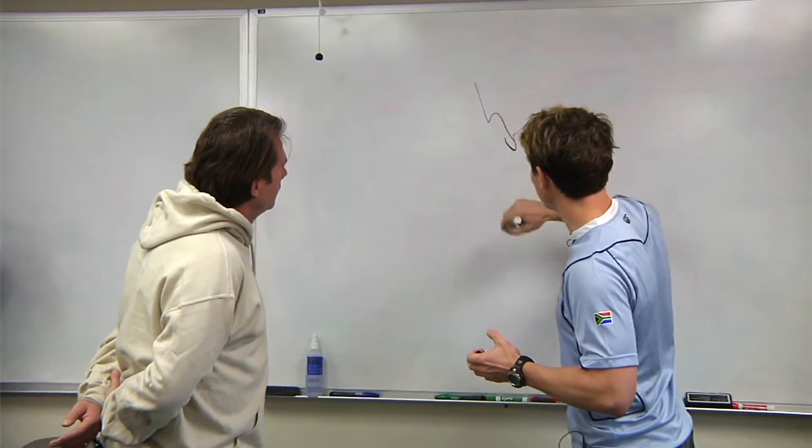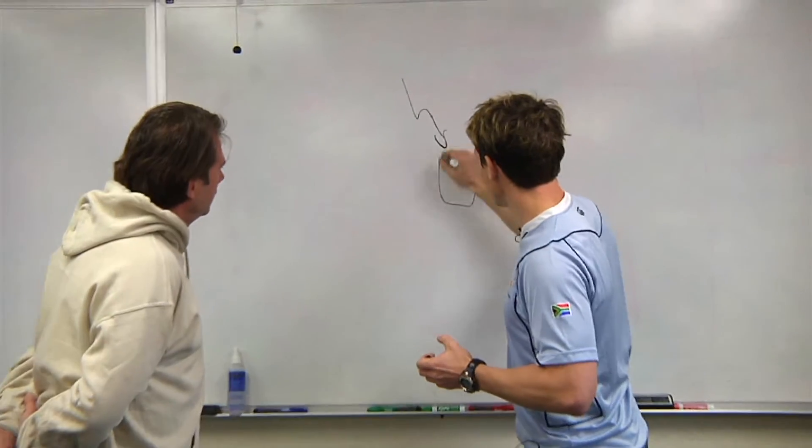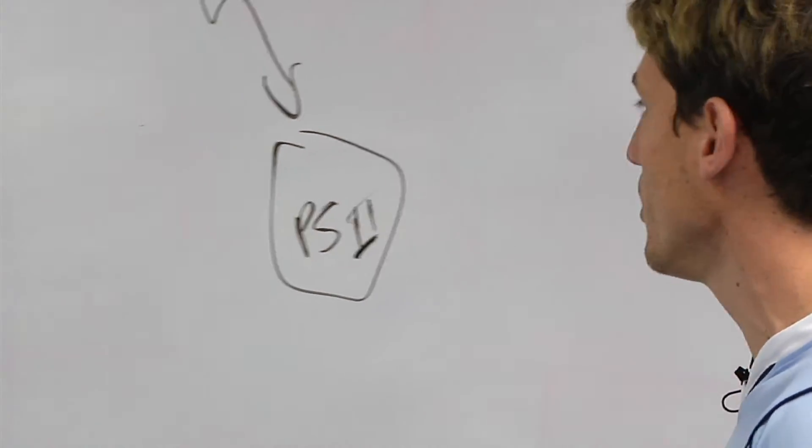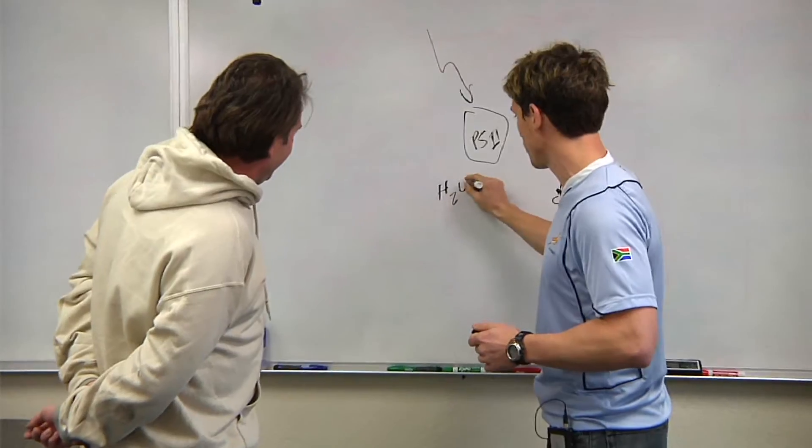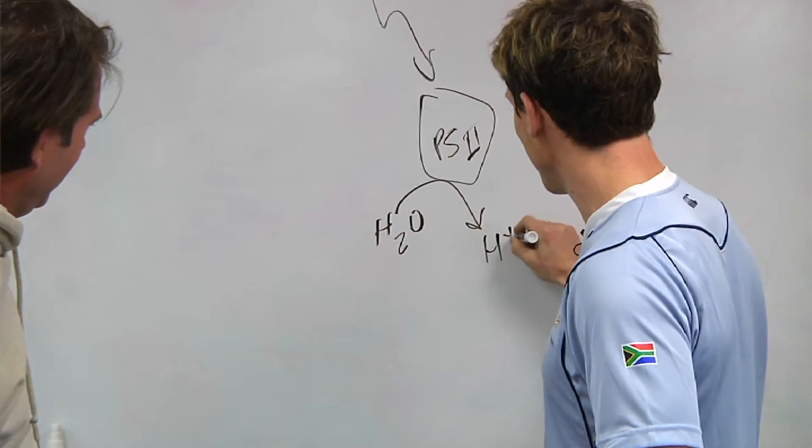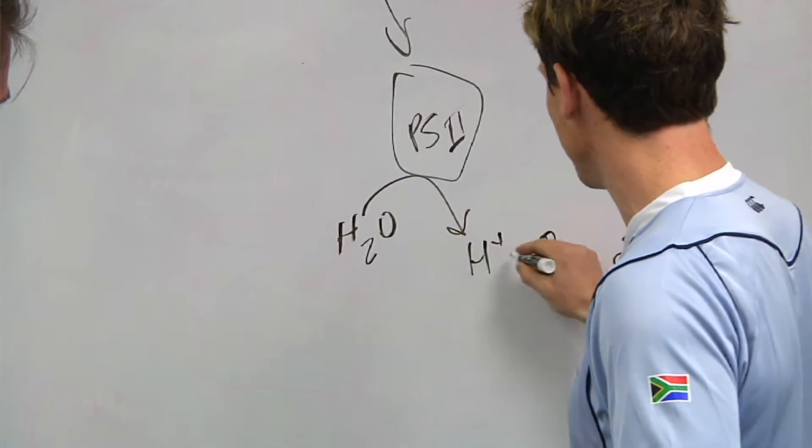When light energy comes in, the first thing it encounters is a protein complex called photosystem 2. This is where water is first split, so this takes sunlight energy and splits it into protons and oxygen.